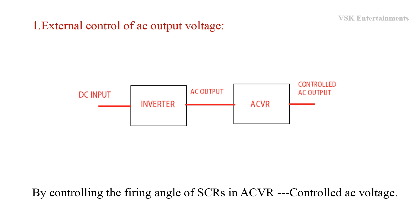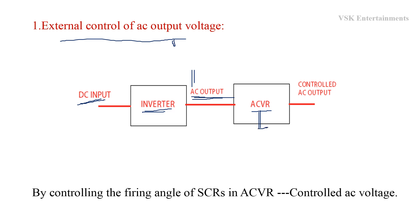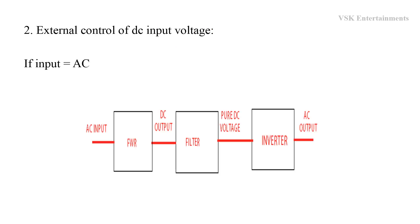Coming to the first method — external control of AC output voltage. The concept of this method is very simple. DC input voltage is applied to the inverter, which converts it to AC output voltage. Here the output of the inverter is uncontrolled. In order to get a controlled AC output voltage, this uncontrolled AC output is applied to an AC voltage regulator consisting of SCRs. By controlling the firing angles of these SCRs, we get the controlled AC output voltage.